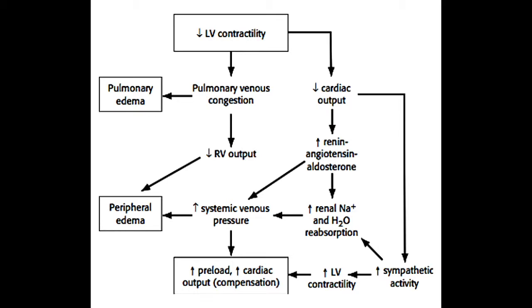To summarize, a decrease in left ventricular contractility from heart failure, be it from myocardial infarction or from some type of cardiomyopathy, leads to decreased cardiac output as well as pulmonary venous congestion. That pulmonary venous congestion can cause pulmonary edema, and also leads to decreased right ventricular output, which leads to right heart failure and peripheral edema. Decreased cardiac output also leads to increased sympathetic activity and increased activity of the renin-angiotensin-aldosterone system. That system causes retention of renal sodium and water and leads to increased systemic venous pressures, which increase preload and cardiac output initially, but over time can lead to negative remodeling of the left ventricle, including dilatation and hypertrophy.